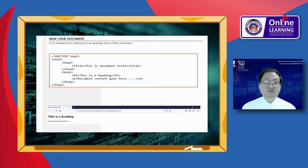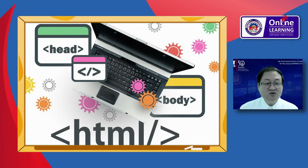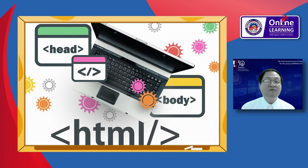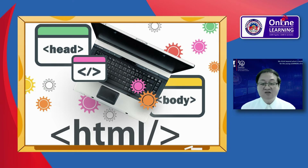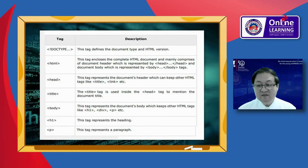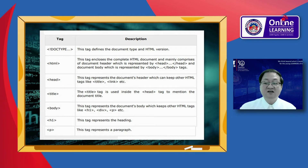Here is an example of a basic HTML document in its simplest form. HTML tags — as mentioned earlier, HTML is a markup language and makes use of various tags to format the content. These tags are enclosed within angle brackets. Except for a few tags, most tags have their corresponding closing tag. For example, the HTML tag has its closing tag slash HTML, and the body tag has its closing tag slash body.